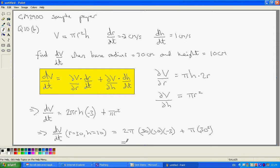And then we can take 30 pi as a common factor here. And then inside we have 2 times 10 is 20, times minus 3 is minus 60. And from here we have plus 30.